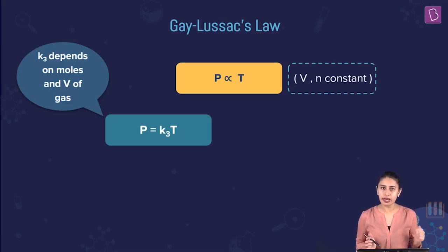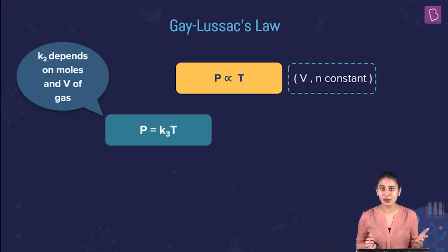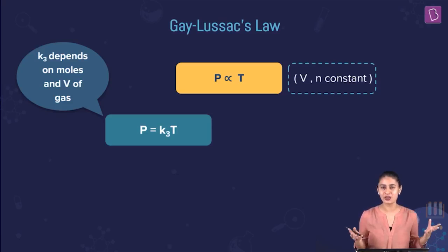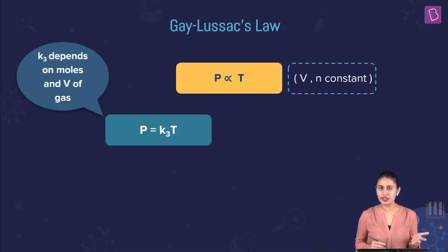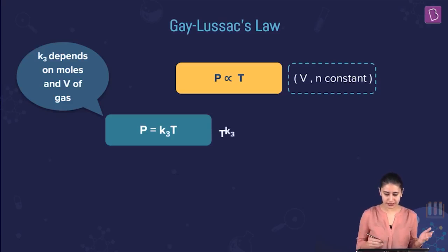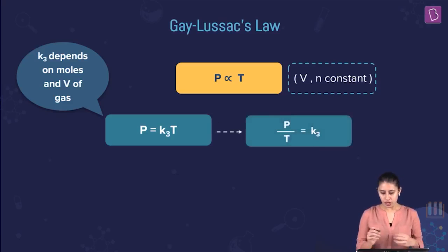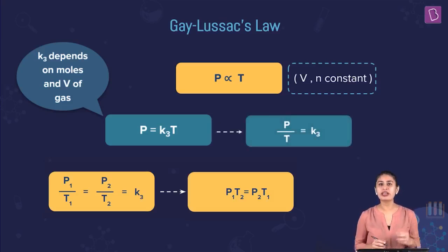What will this constant depend on? Obviously, what we are keeping as constants — we are keeping volume and moles constant — is what it will depend on. If I take temperature to the denominator, we get pressure by temperature as a constant. So we can say that P1/T1 = P2/T2, or equivalently P1T2 = P2T1.